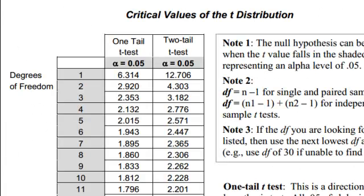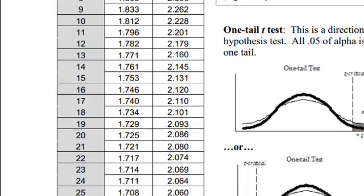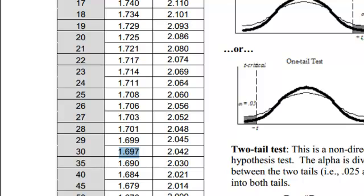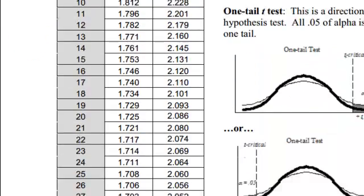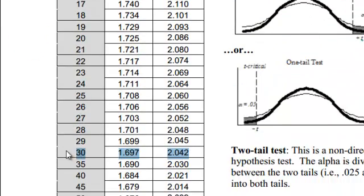So, in order to use this t-table, we're going to look up 30 degrees of freedom. That's our row that we care about, and in terms of the column, we're using this left column, one-tail t-test, alpha 0.05. So, the row of 30 degrees of freedom, the column of alpha 0.05 for a single-sample t-test, and that t-critical is 1.697.